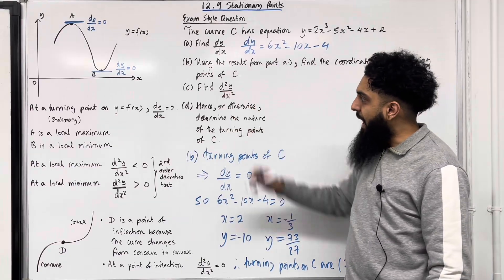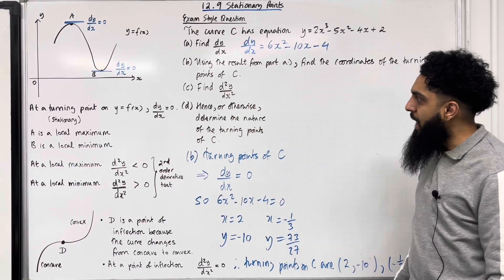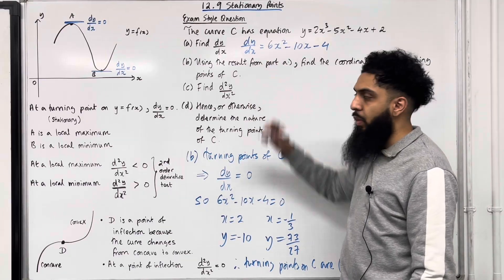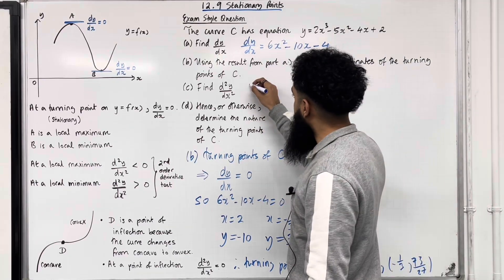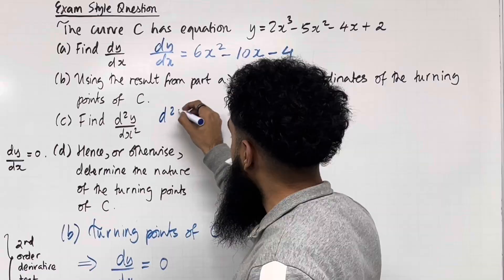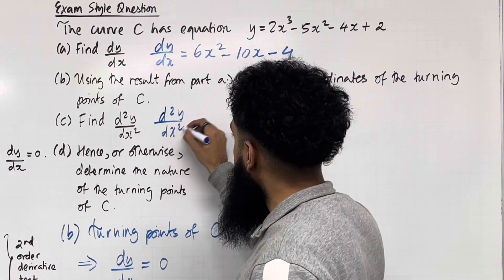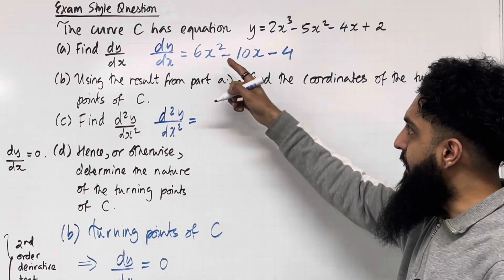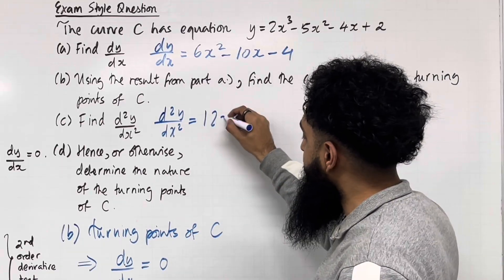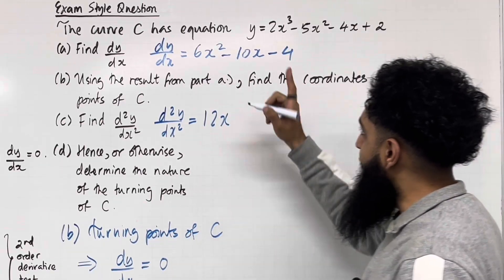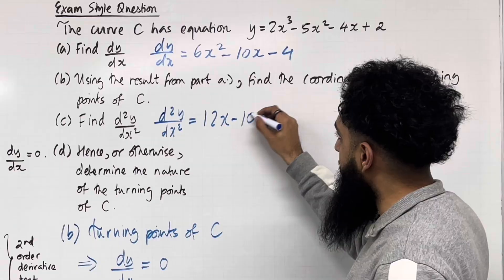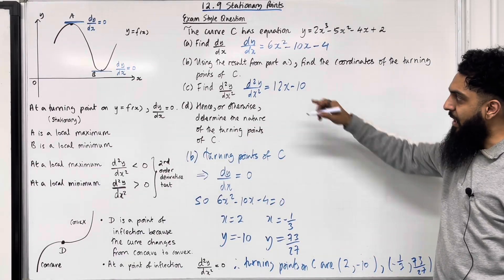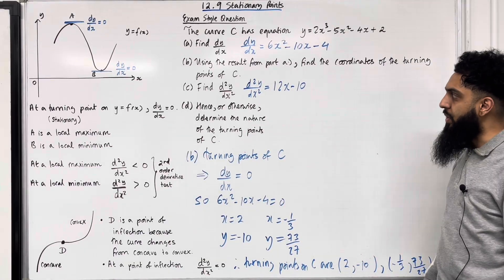Part C: find d²y/dx². We need to differentiate dy/dx with respect to x. Differentiating term by term: the first term differentiates to 12x, the second term differentiates to −10, and the final term differentiates to 0. So the second order derivative is d²y/dx² = 12x − 10.